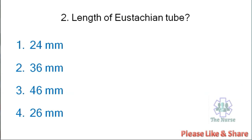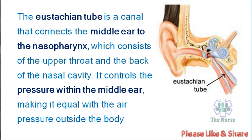Next question: Length of the Eustachian tube. Options: 24mm, 36mm, 46mm, 26mm. Correct answer is 36mm. The Eustachian tube is a canal that connects the middle ear to the nasopharynx, which consists of the upper throat and the back of the nasal cavity. It controls the pressure within the middle ear, making it equal with the air pressure outside the body.